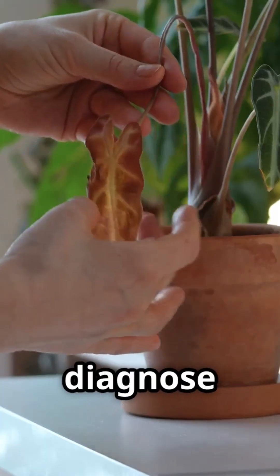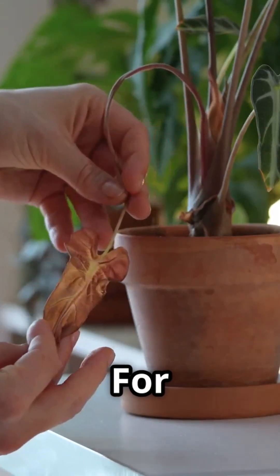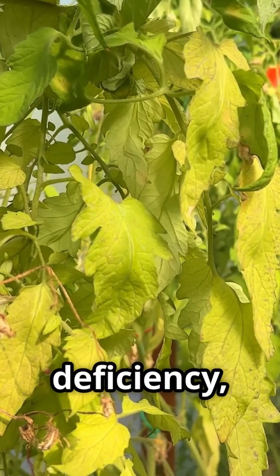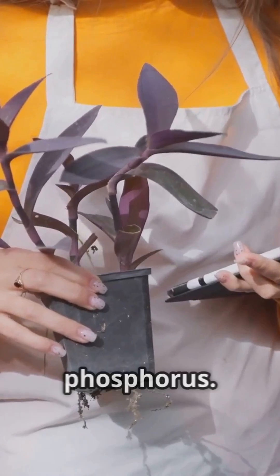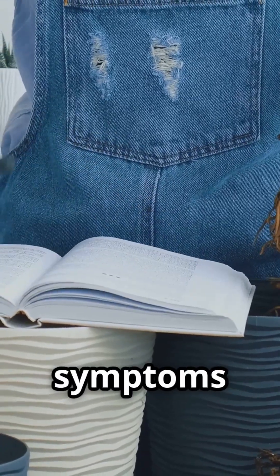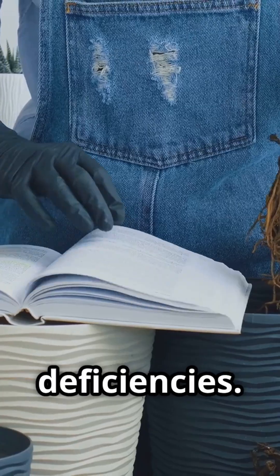Next, we'll cover how to diagnose specific deficiencies. For example, yellowing leaves can often indicate a nitrogen deficiency, while purple or reddish leaves may suggest a lack of phosphorus. We'll provide a detailed guide to help you match symptoms to the corresponding nutrient deficiencies.